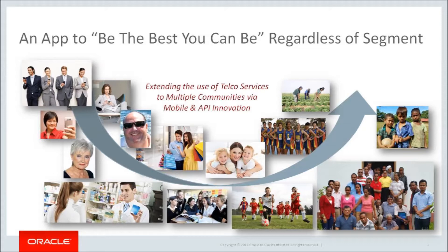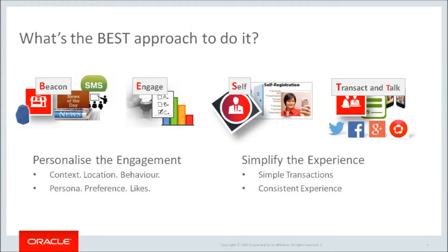To help us do that, we are extending the use of telco services to multiple communities via mobile and API innovation with a framework called BEST. It's about the utilisation of beacons, where people can get many touches, many messages as they participate in their ecosystem. It's about Engage, which is utilising short, simple surveys to get feedback. Self, where you can register your interests. And Transact and Talk, where you can ask for things or talk to people.